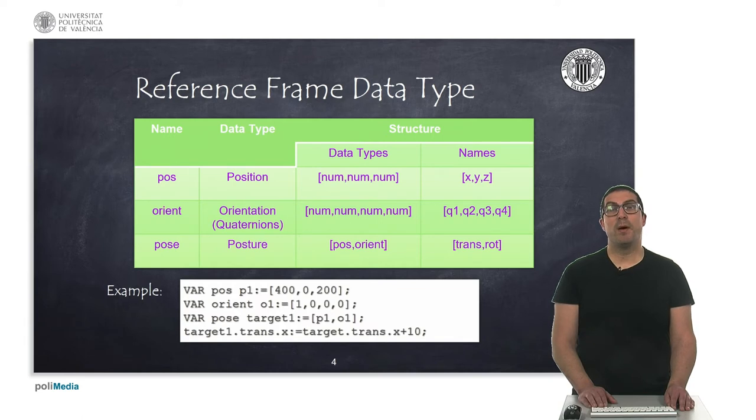To define a reference system, we can do that using the data type POSE. The position of the reference frame is defined with the data type POSE, which includes three fields X, Y, and Z with the values of the Cartesian coordinates of the origin of the reference frame. And the orientation can be specified with the field Orient, which is indeed a quaternion with numerical fields Q1 to Q4. For example, the POSE data type is a type containing the POSE and Orient data types. As I said, but their field names are TRANS and ROT respectively, so don't be confused here. Here, I show you an example of how to initialize and assign values for this type of data.